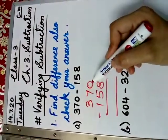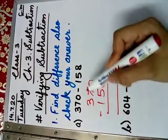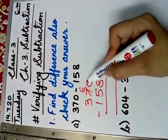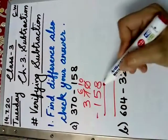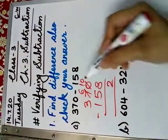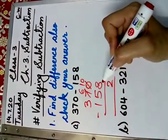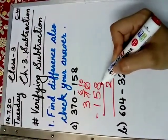As you see, 0 cannot subtract 8 so 0 will go for borrowing. 7 will give borrowing so it will be reduced by 1. It will become 6 and 0 will become 10. 10 minus 8 is 2. How do you do? After 10, you do back counting till 8.